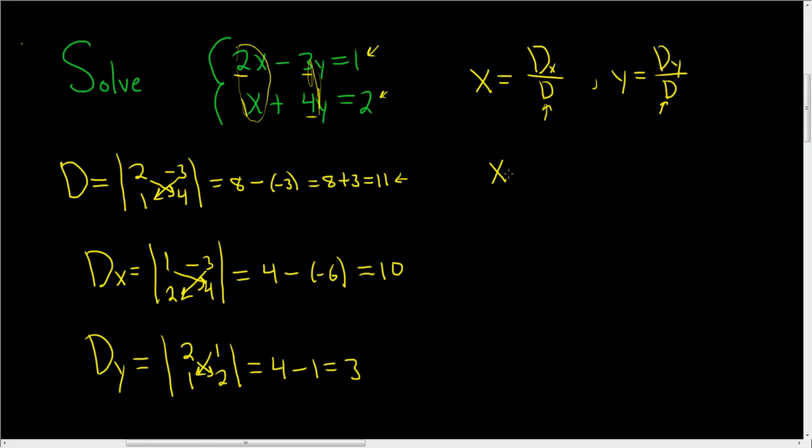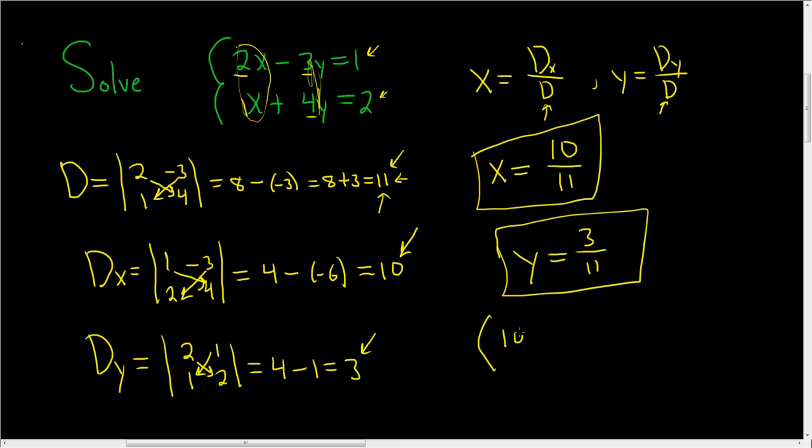So the final answer is X equals, big D sub X was 10, and big D was 11. So 10 over 11, that's the X-coordinate. And Y is equal to big D sub Y, which was 3, divided by big D, which is 11. So that's the Y-coordinate. If you wanted to write the answer in ordered pair form, it would be 10 over 11, comma 3 over 11. And that's it.